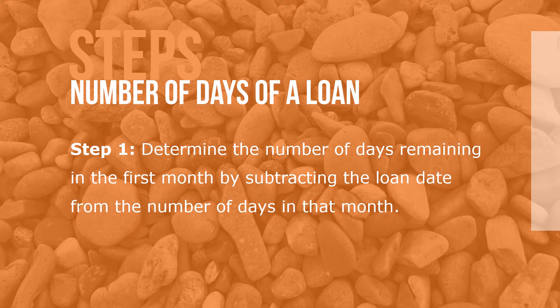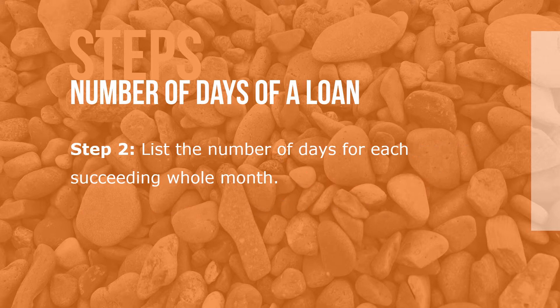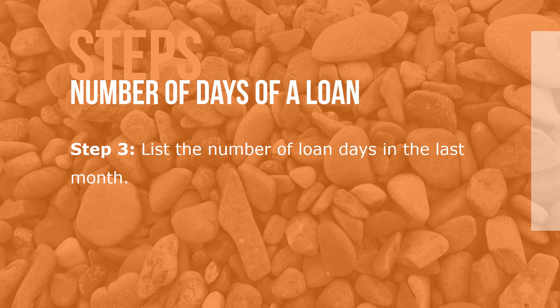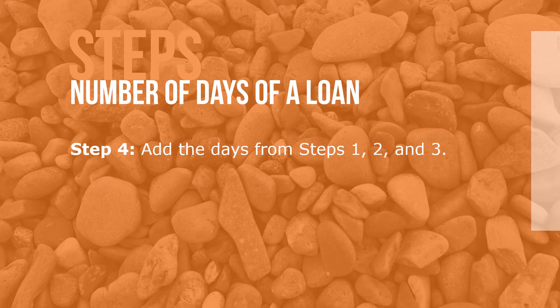Here are the steps for determining the number of days of a loan. Step one: determine the number of days remaining in the first month by subtracting the loan date from the number of days in that month. Step two: list the number of days for each succeeding whole month. Step three: list the number of loan days in the last month. Step four: add the days from steps one, two, and three.